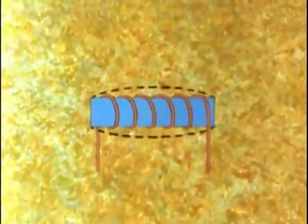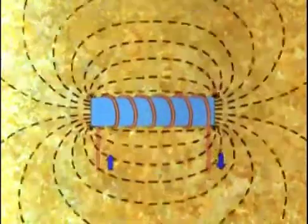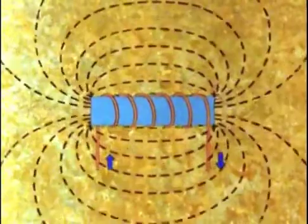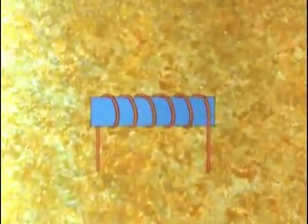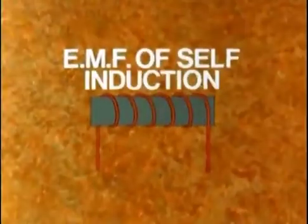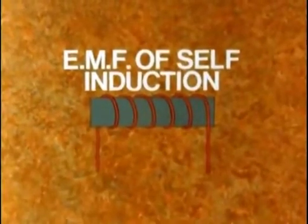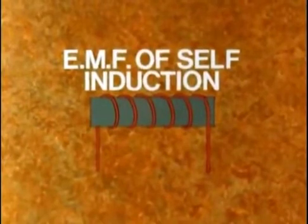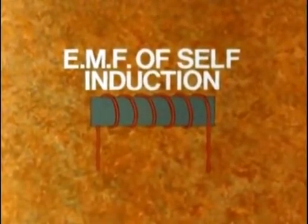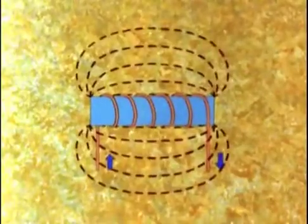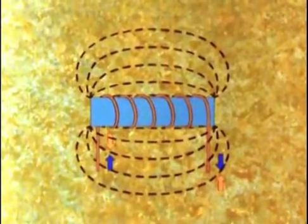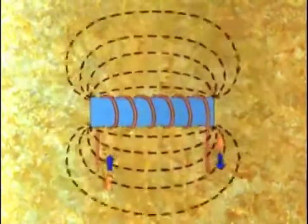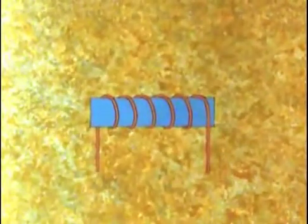The results of these changes in the number of lines of force through the coil is that an additional EMF is induced within the coil itself. This is called an EMF of self-induction or counter-EMF. An important feature of this EMF is that it will always try to stop the change happening. When you switch on, the induced EMF opposes the buildup of the field, slowing it down. And when you switch off, it tries to keep the field going.